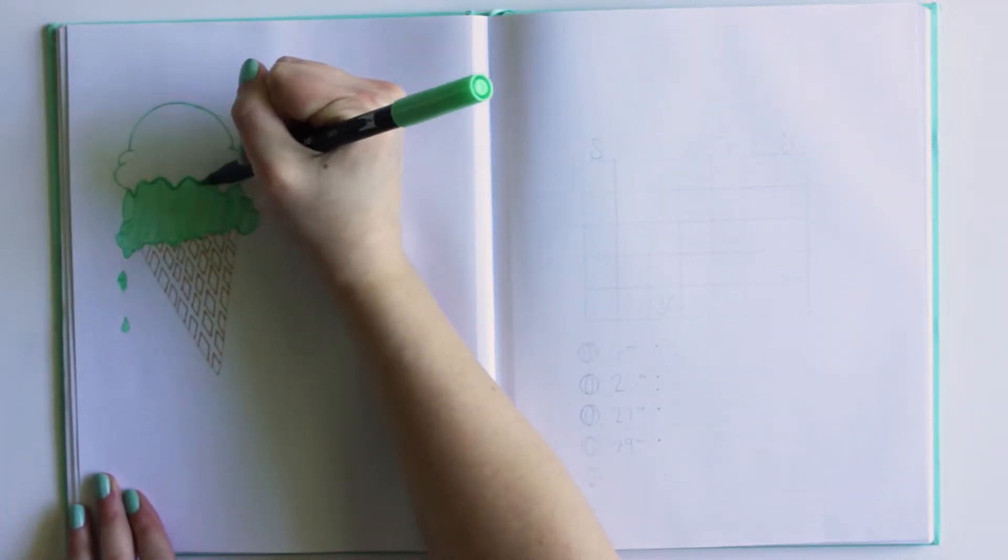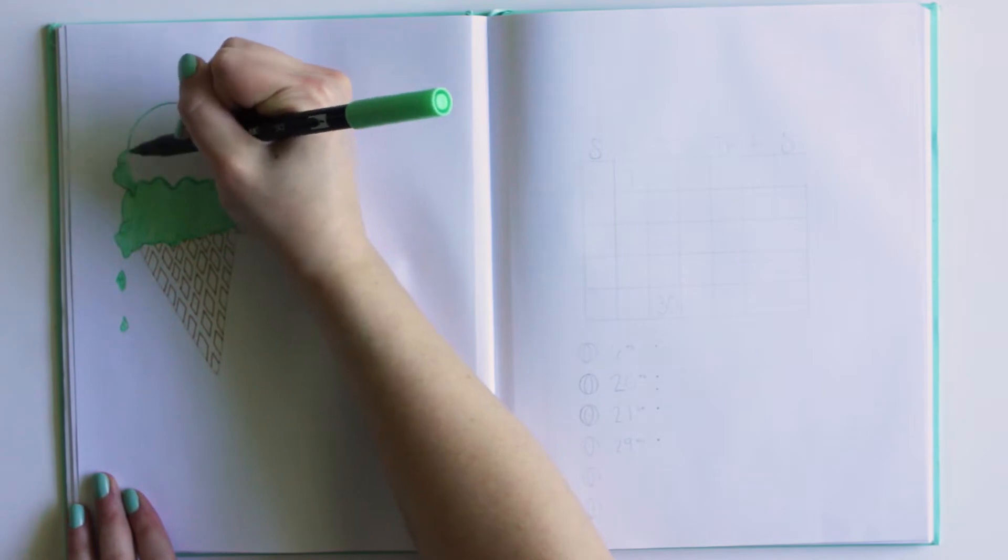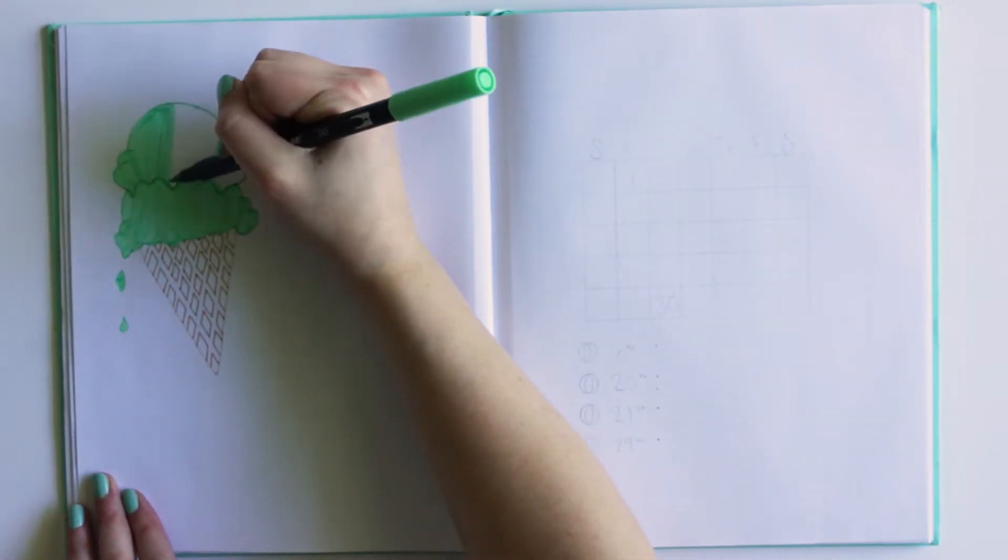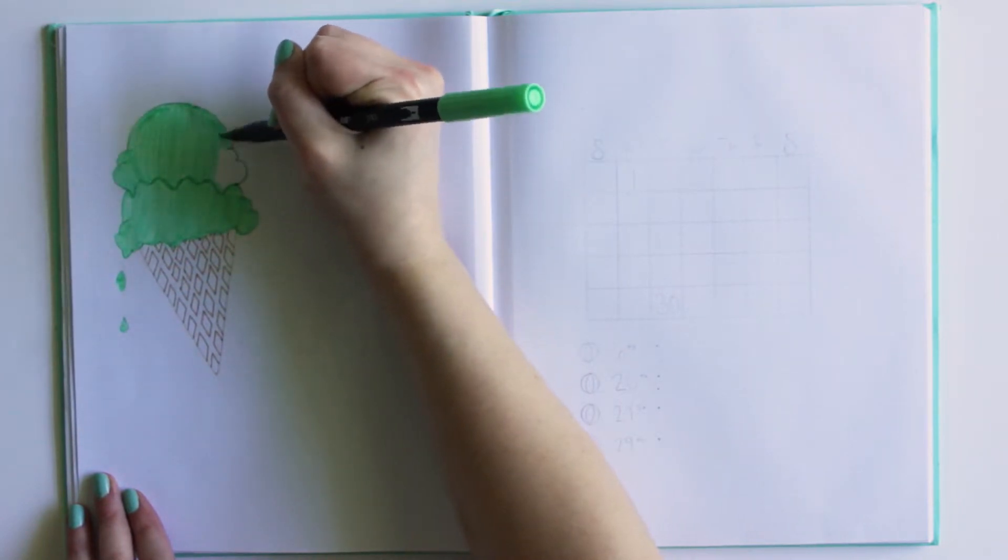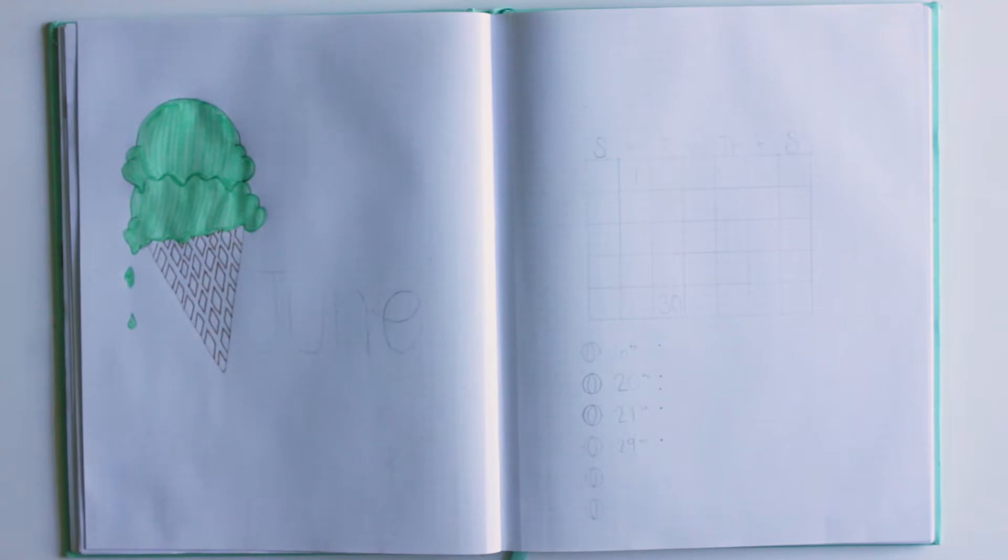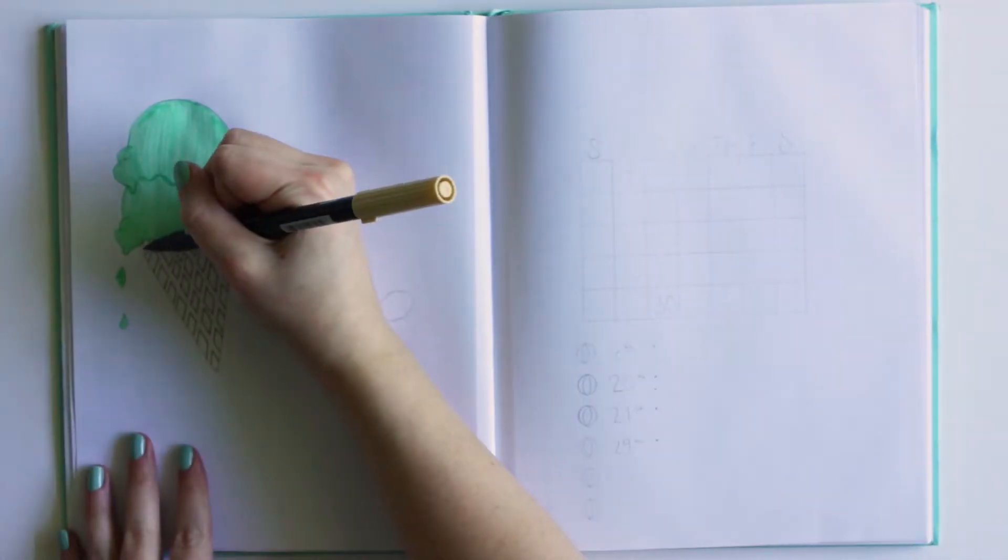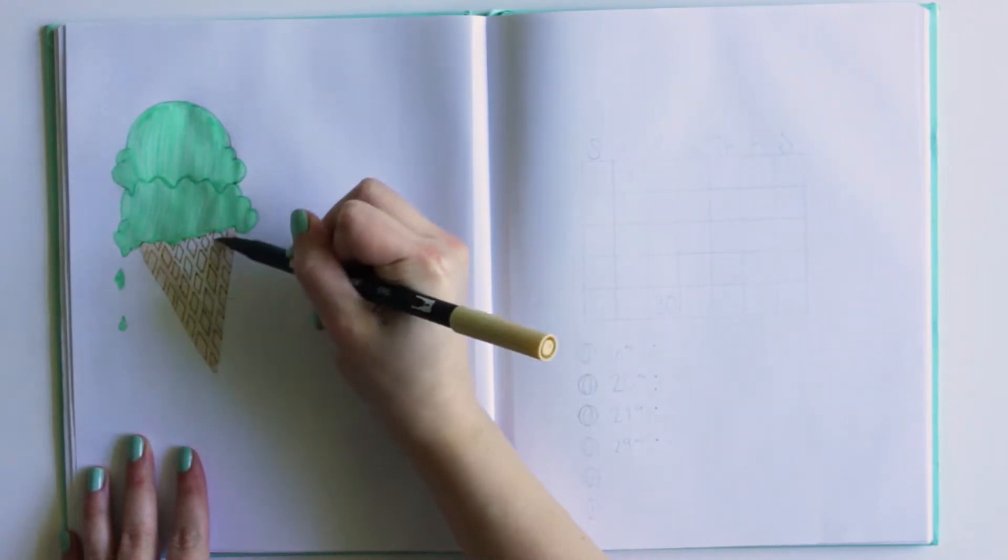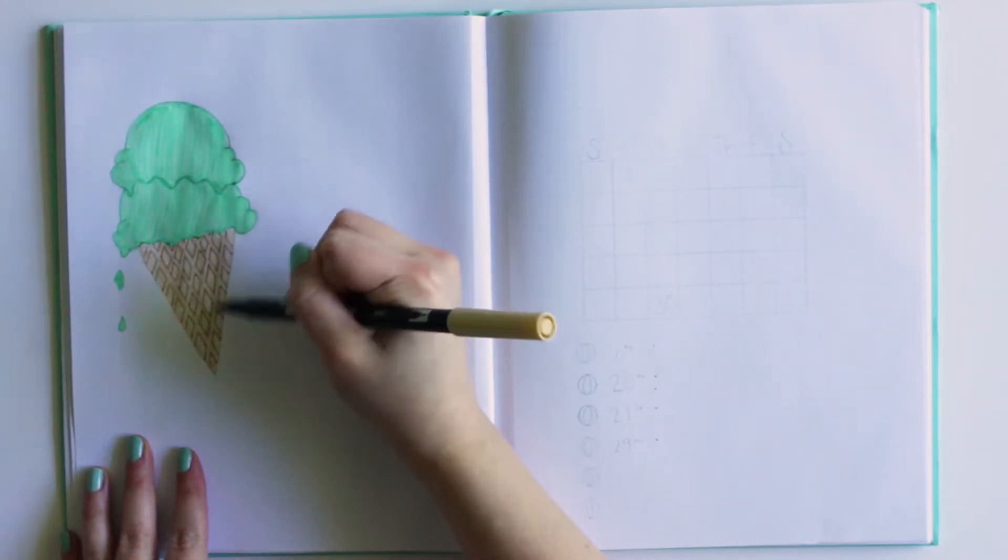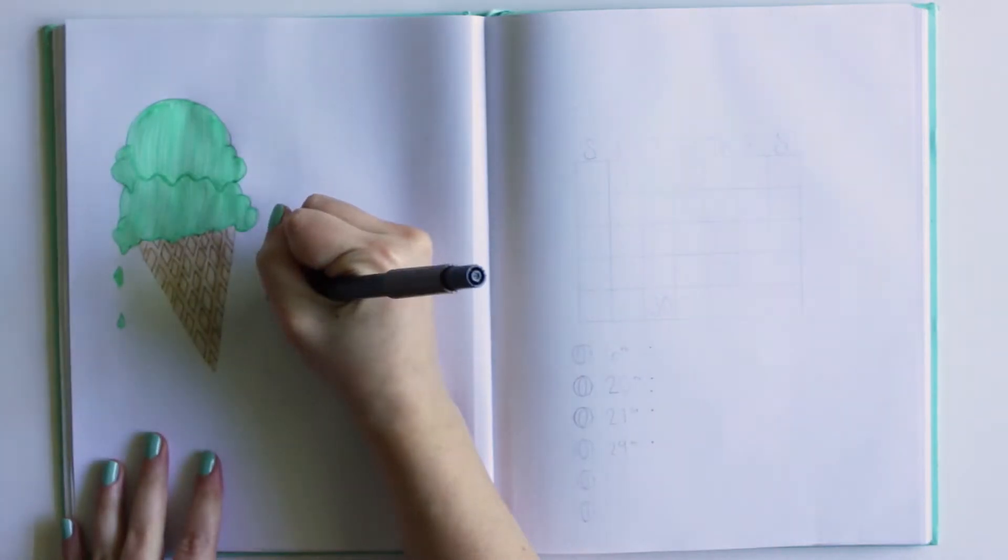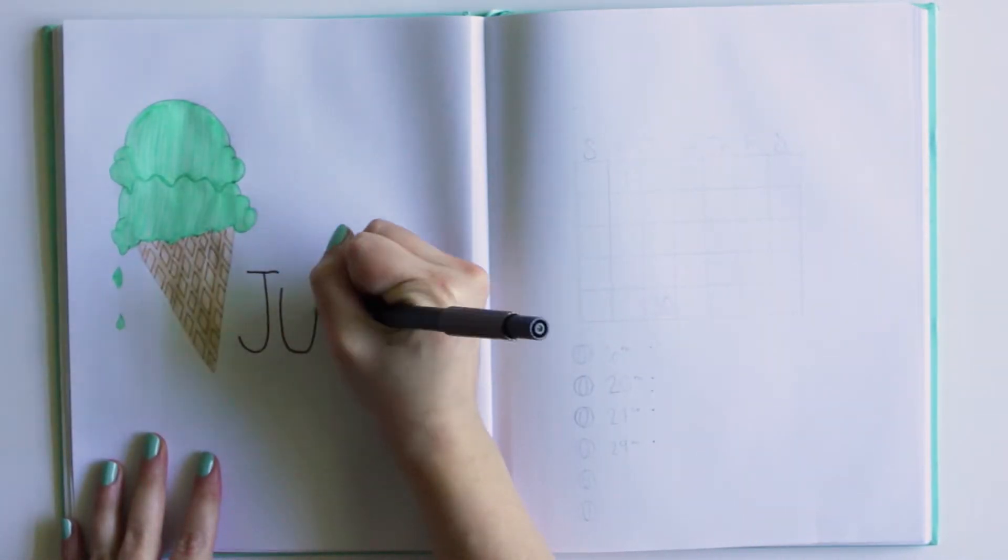I'm pretty happy with how my mint ice cream turned out, but I will say I wish that I stuck with the mint theme throughout my whole June spread. I kind of wanted to go for a summer theme, but ice cream is a summer thing, and then I thought to make every other page something else that's summer. But I wish I would have just stuck to the ice cream thing because I actually really love my June title.